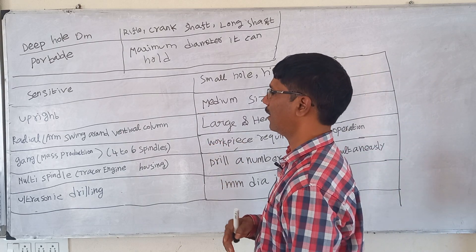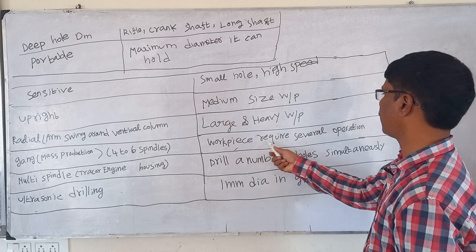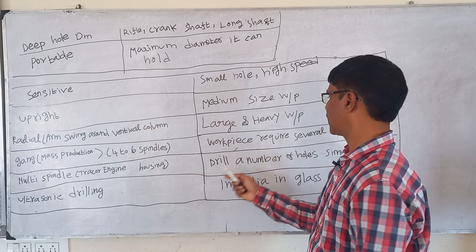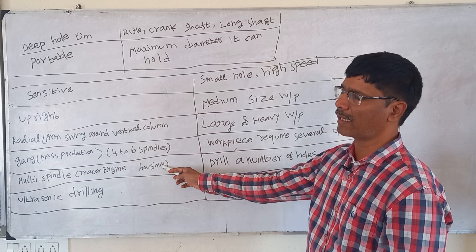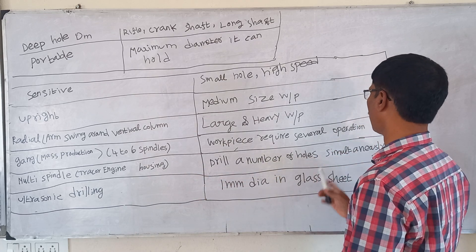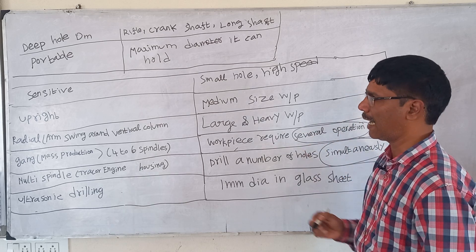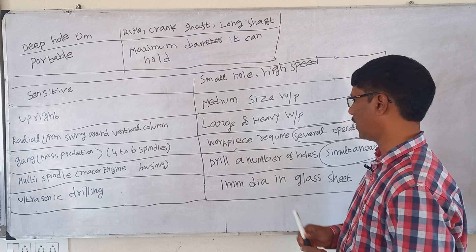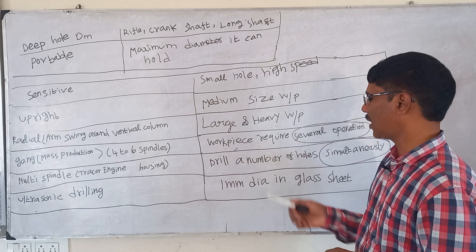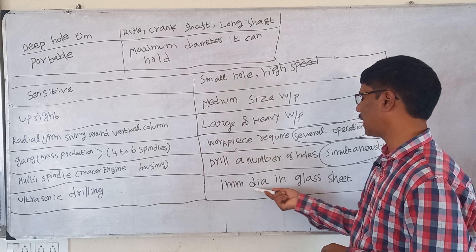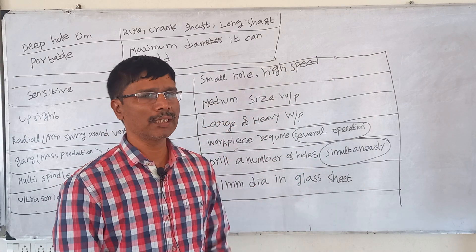A gang drilling machine is useful for mass production; it consists of four to six spindles and can perform several operations on a workpiece. In gang drilling, different operations are performed sequentially rather than simultaneously. A multi-spindle drilling machine can drill a number of holes simultaneously, for example in tractor engine housings, performing all operations at the same time. Ultrasonic drilling can drill holes as small as 1 mm diameter in glass sheets or brittle materials.